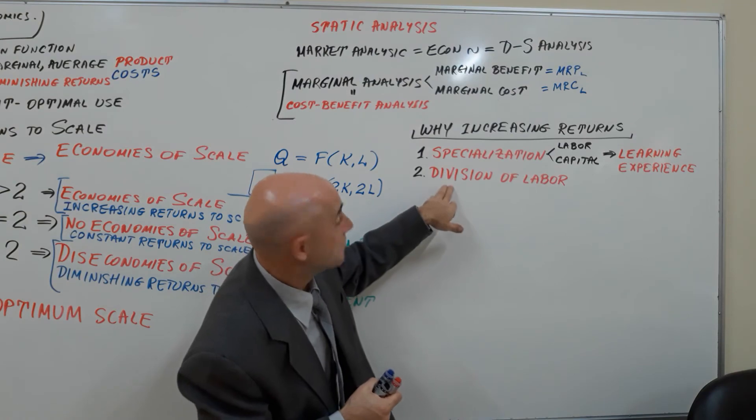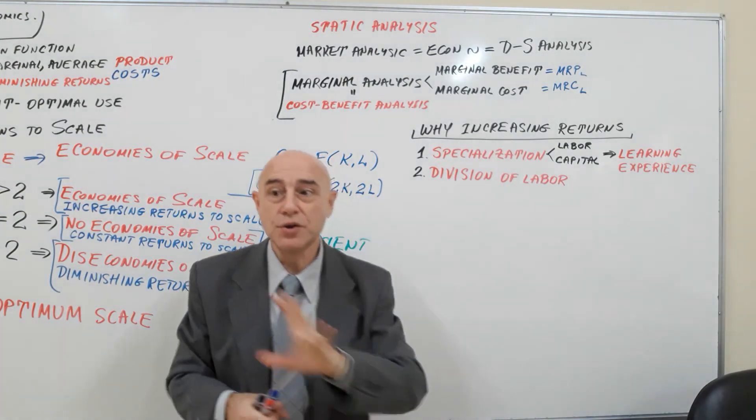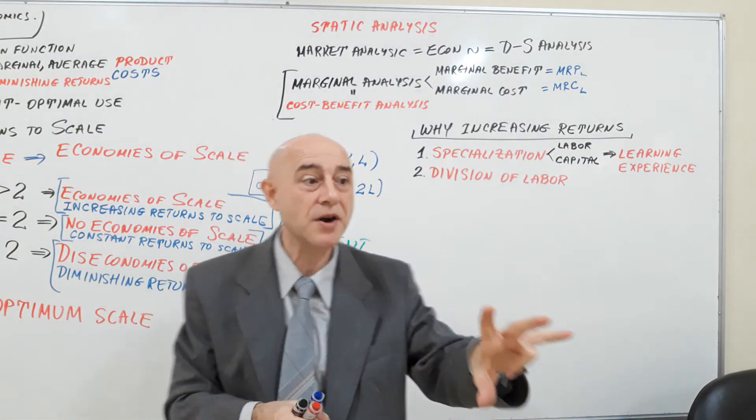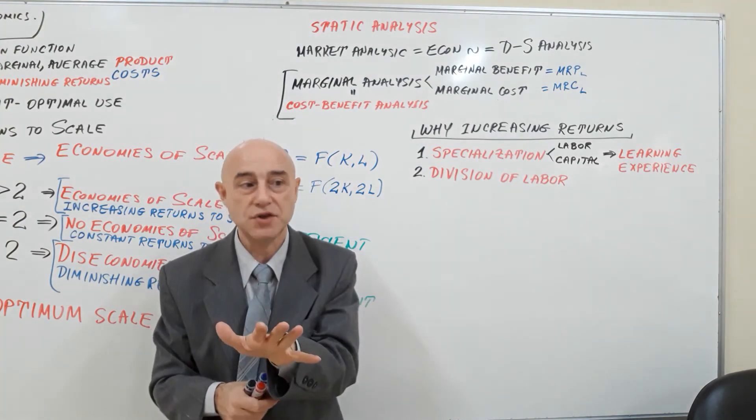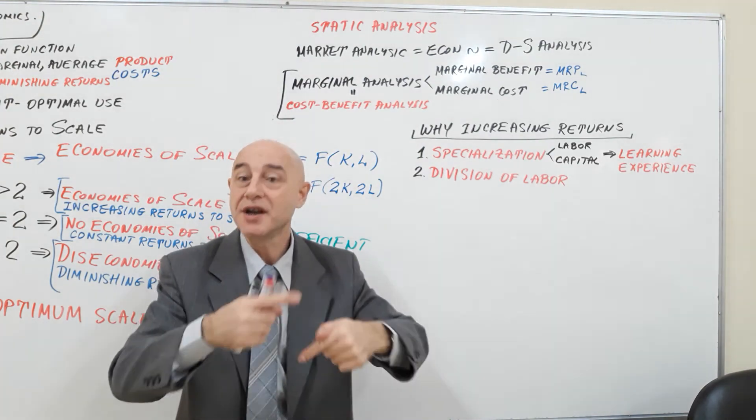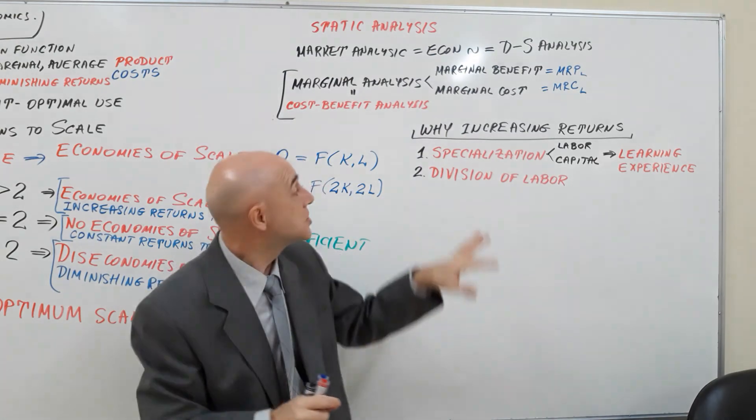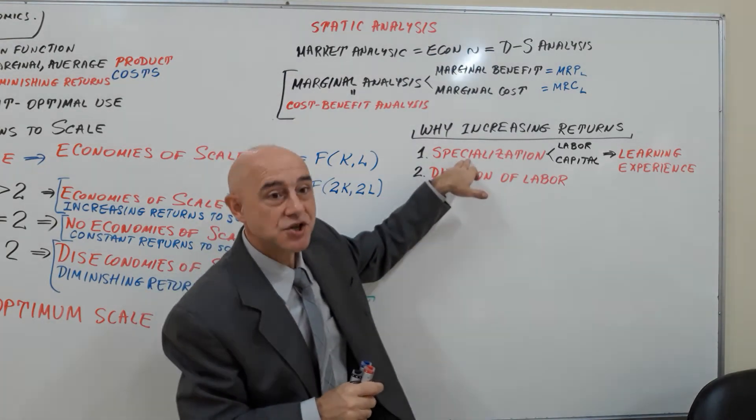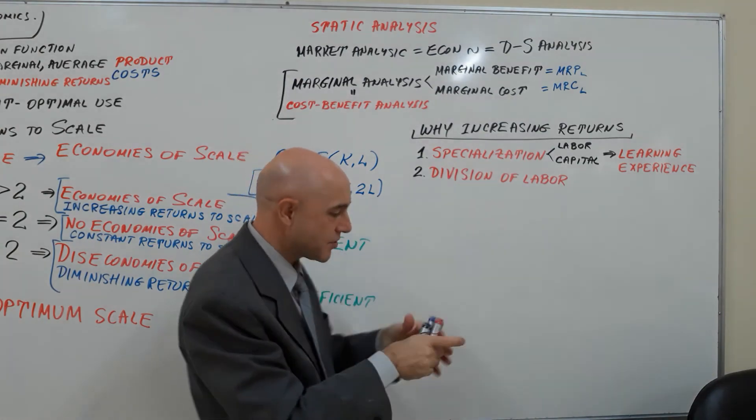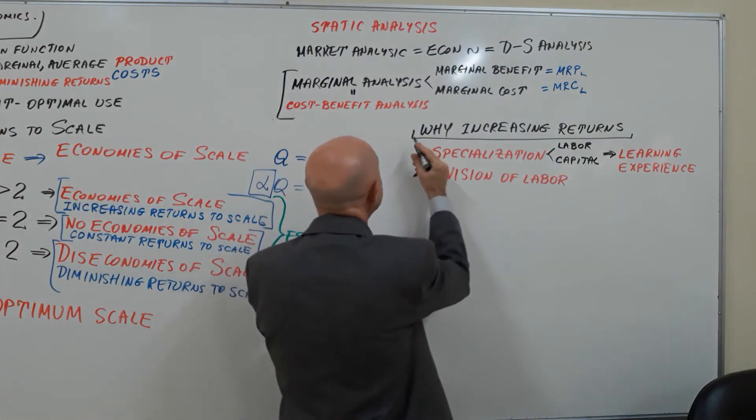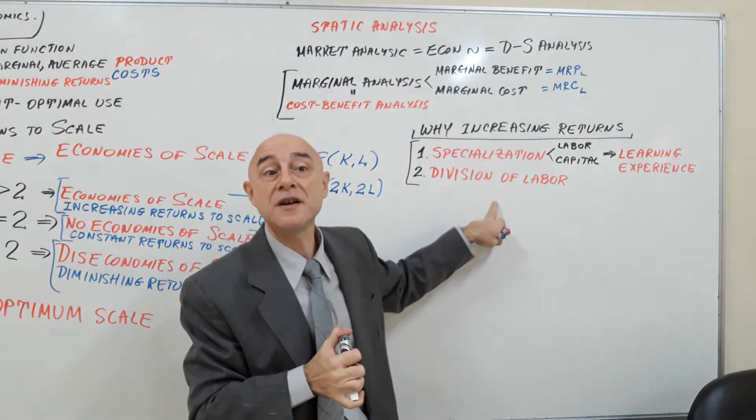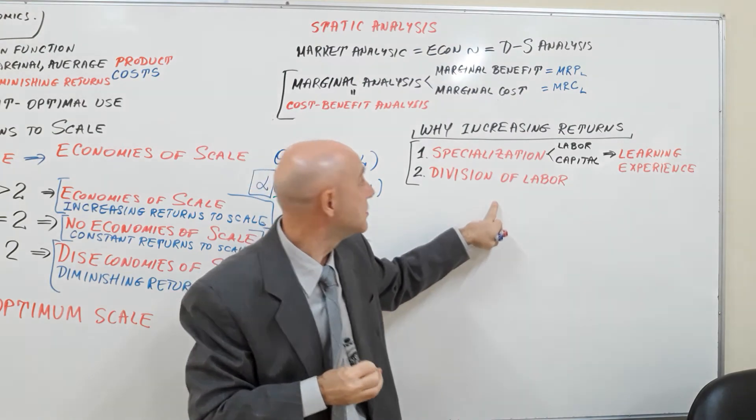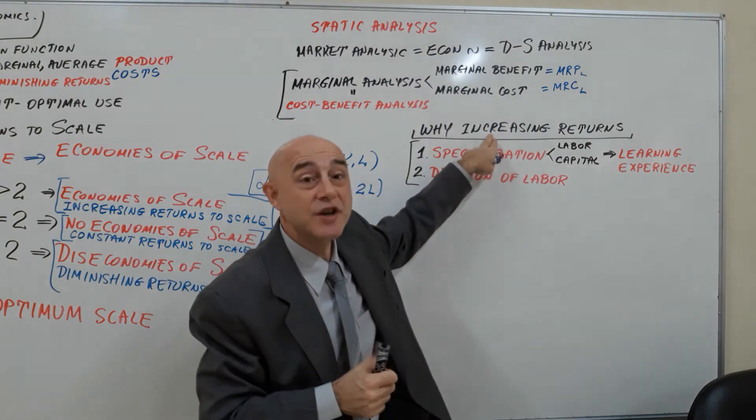So she'll get to, through division of labor, you do only this part, you do only that part. The third person will do only, let's say, the shelves. You restock and arrange the shelves. So they will specialize through division of labor. So these two are, let's just say, the same thing. And these two are the fundamental reason for increasing returns.